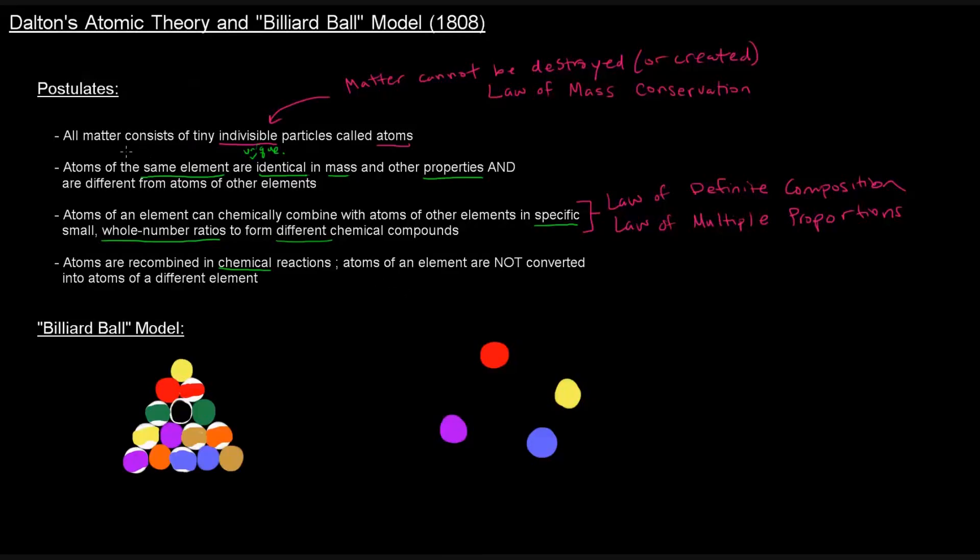So those were his postulates. And based on those postulates, he came up with what was called the billiard ball model. And billiard balls, of course, if you guys have played pool or billiards, as some people call it, this is basically a pool table rack, right? If you have a little triangle thing. Anyway.